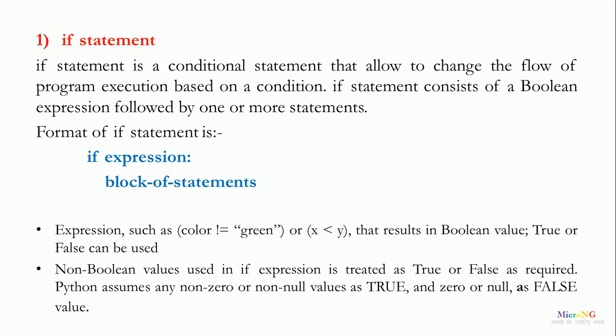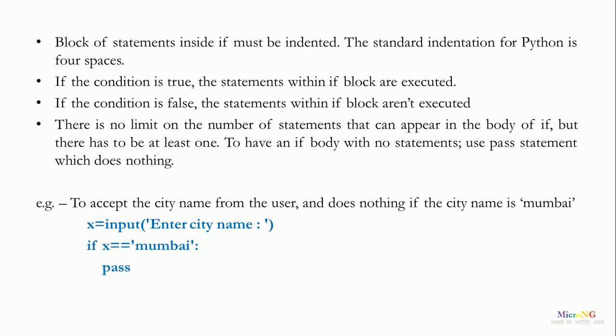The expressions used in if statements can result in a boolean value — true or false. Conditions with relational operators can be used, such as color not equal to green or x less than y. Non-boolean values are treated as true or false: Python assumes any non-zero or non-null value as true and zero or null as false. Statements inside the if block must be indented, with the standard indentation being four spaces.